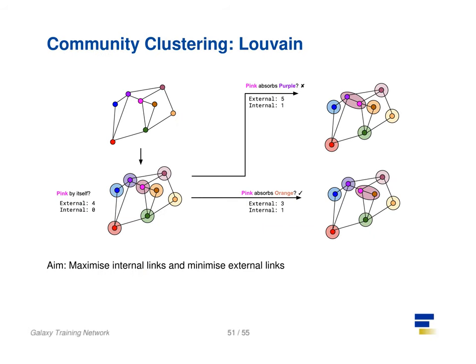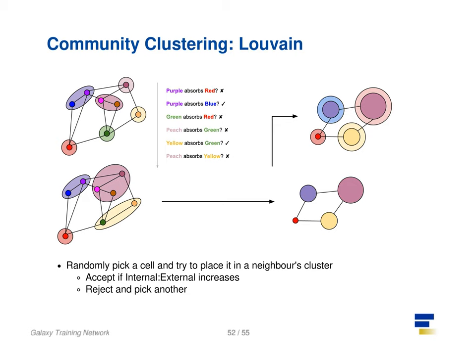Louvain clustering is a widely used type of community clustering for single cell data. Here each cell is assigned a neighborhood of its own, and the number of internal and external links between neighborhoods are counted. For each iteration, a random cell is selected and brought within the neighborhood of another cell, and the internal and external links are once again counted. If the new configuration has reduced the number of external links in favor of more internal links, then the configuration is kept. If the new configuration has instead increased the number of external links, then it is rejected and another cell is picked and tested. By performing this multiple times, a community structure of cells is built to whichever degree of specificity the user desires.